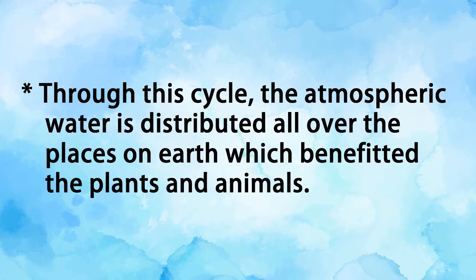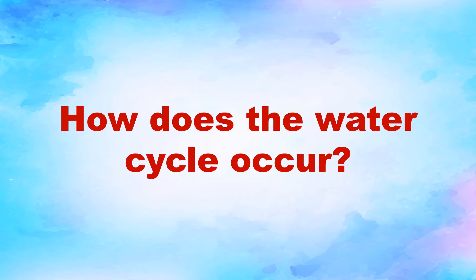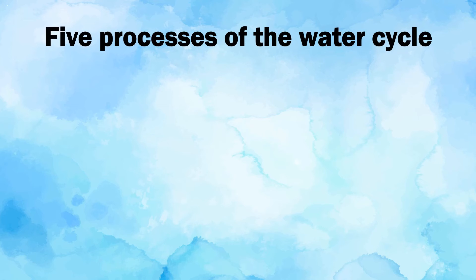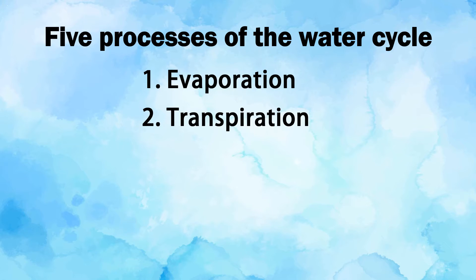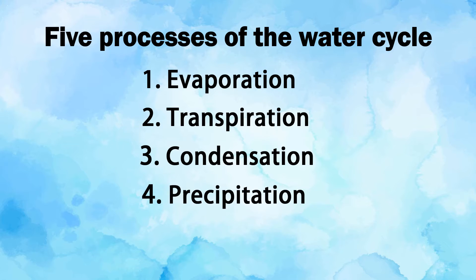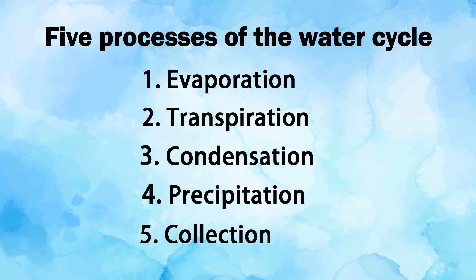Through this cycle, atmospheric water is distributed all over the places on Earth, which benefits plants and animals. How does the water cycle occur? There are five processes occurring in the water cycle: evaporation, transpiration, condensation, precipitation, and collection. Let us explain each process.